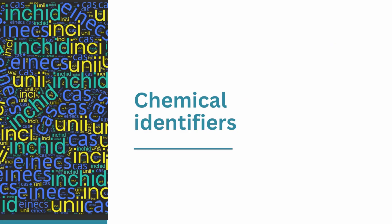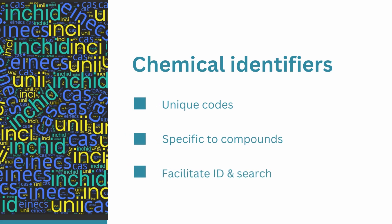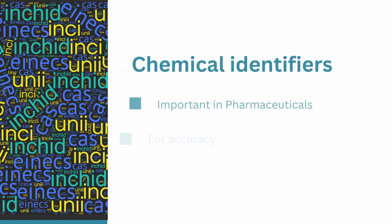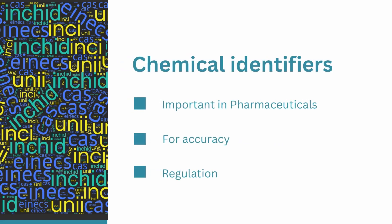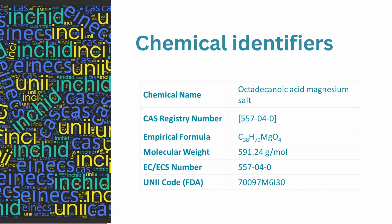At Pharmacentral.com, we are always emphasizing chemical identifiers. They are important because they provide a consistent and standardized way to identify and refer to specific chemicals. This is especially important in pharmaceuticals, where accurate identification of chemical compounds is critical. Chemical identifiers also help to facilitate the regulation of chemicals and enable regulatory agencies to track the use and potential hazards of specific chemicals. Here is a list of the most important chemical identifiers, as shown here in this table.